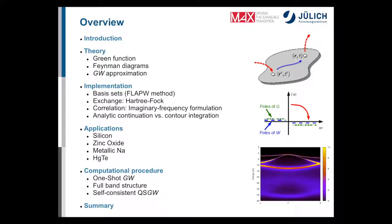I will show illustrative applications for silicon — the material you will use most in the afternoon session — zinc oxide, which is an extreme case in the literature, metallic sodium, and mercury telluride as an example where spin-orbit coupling becomes important. At the end I will give some practical information on how a GW calculation is carried out: one-shot GW with FLEUR, band structure calculation, and the self-consistent QS-GW approach, followed by a summary.